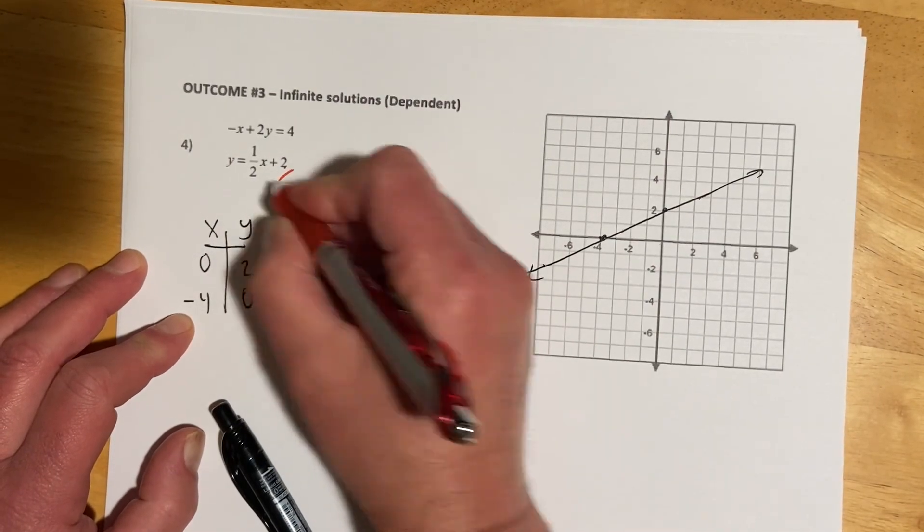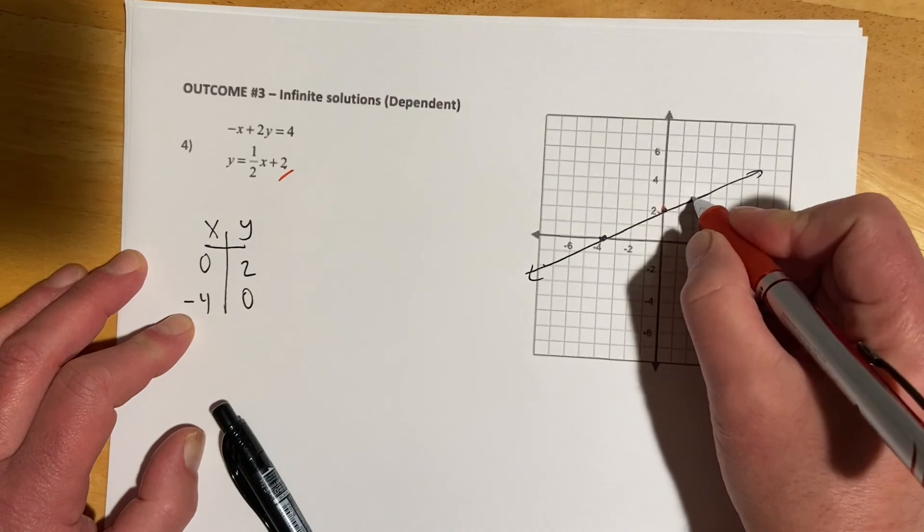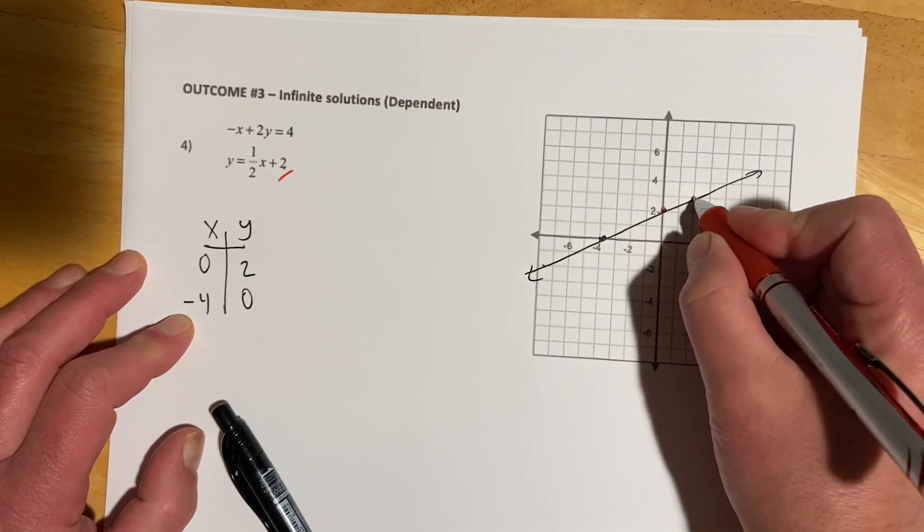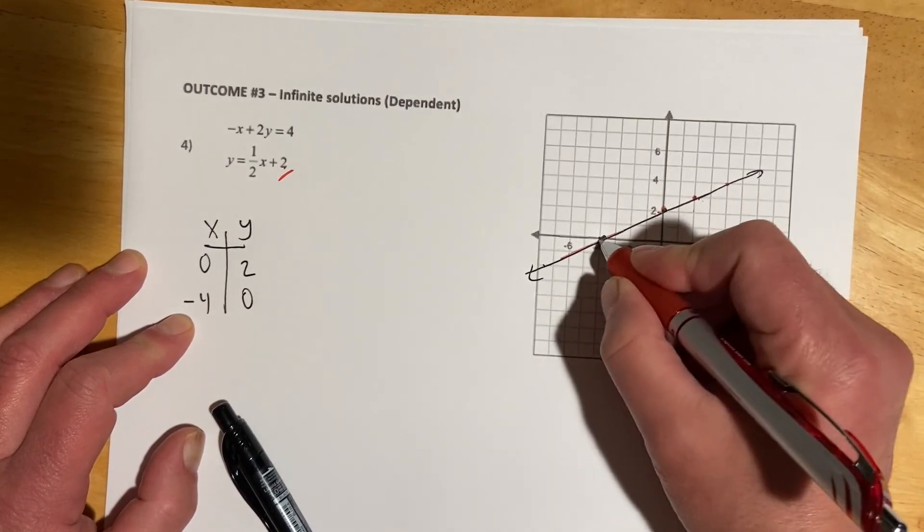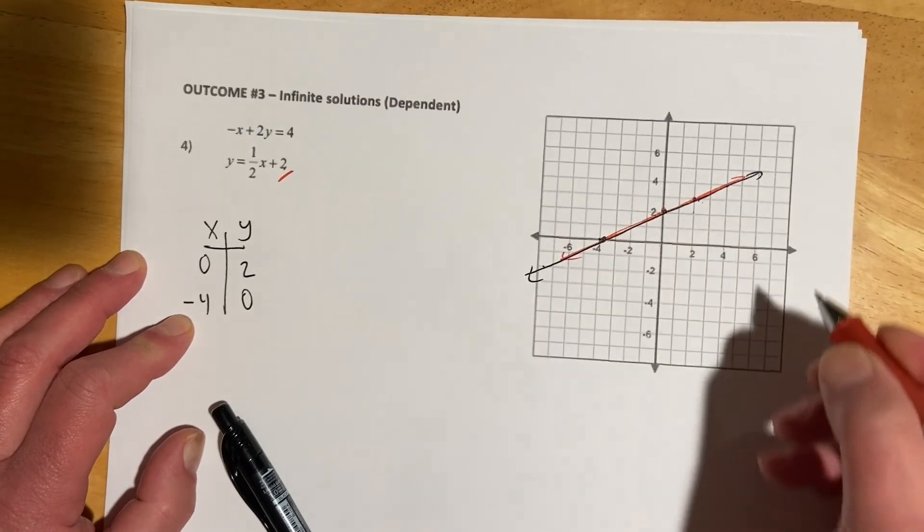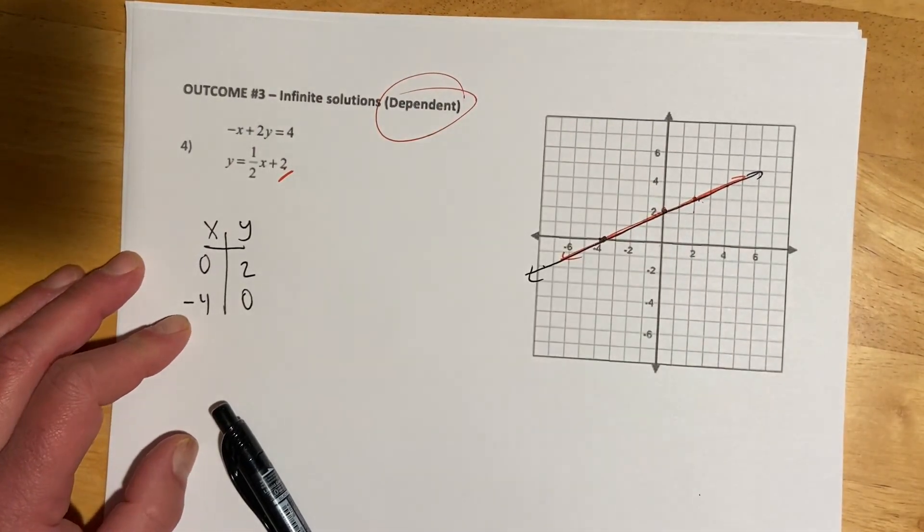And then this one, my y-intercept is at 2 and my slope is a half. So it's going to go over 1, up 2. I'm sorry, over 2, up 1, over 2, up 1. And you can see it's landing right on top of that first line I drew. And so that makes us dependent.